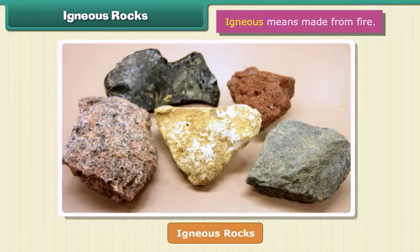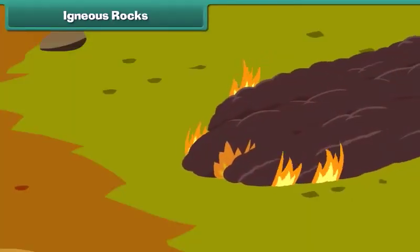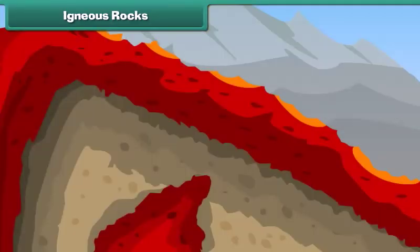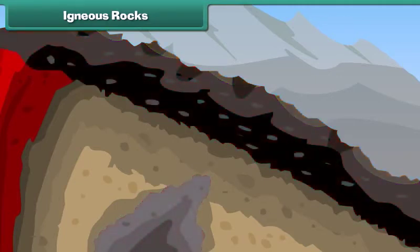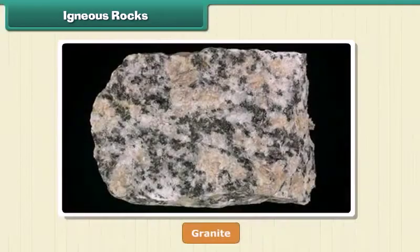Igneous means made from fire. When volcanoes erupt, it causes the liquid rock to rise above the ground. When this liquid rock is present inside the earth, it is called magma. This magma cools and becomes solid. Rocks thus formed are called igneous rocks. They are also called primary rocks. Granite is an example of igneous rock.